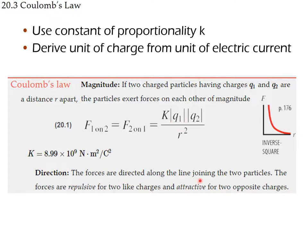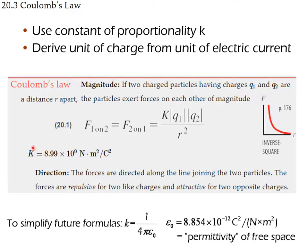The direction is always along the line joining the two particles, either attractive or repulsive. K can also be written as 1/(4πε₀), where ε₀ is the permittivity of free space. This form is valid in free space or air. If the two charges were embedded in water, the permittivity would be different — we'd use the permittivity of that medium instead.